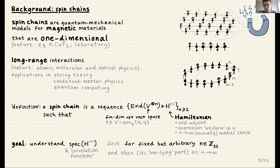Let me start with a bit of physical background in case you have never seen the notion of spin chains — this is really the only physics slide in the talk, so don't worry. Spin chains originate as quantum mechanical models for magnetic materials. If you have a magnet and zoom in, it consists of a three-dimensional array of atoms. According to quantum mechanics, these atoms have a quantity called spin — think of it as a little arrow pointing up or down. These arrows interact, possibly wanting to point in the same direction or alternate, giving rise to magnetism at large scale.